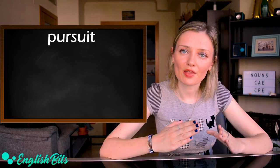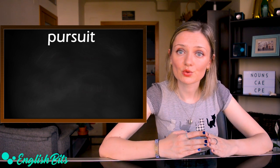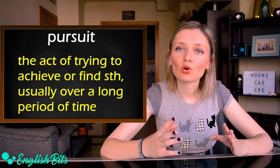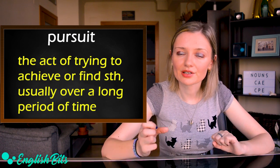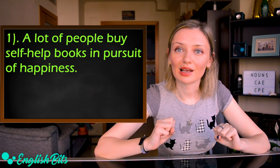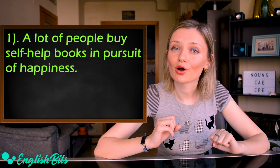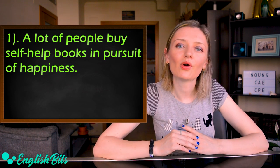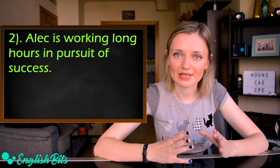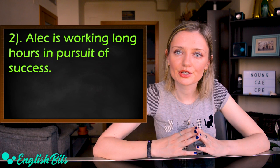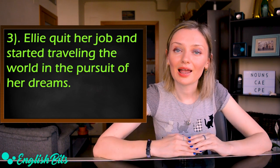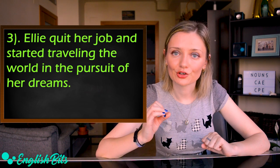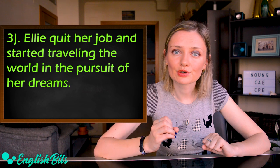Number seven is 'pursuit.' The American pronunciation is 'pursuit' and the British one is 'pursuit.' It's the act of trying to achieve or find something, usually over a long period of time. Examples: A lot of people buy self-help books in pursuit of happiness. Alec is working long hours in pursuit of success. Alec quit her job and started traveling the world in pursuit of her dreams.